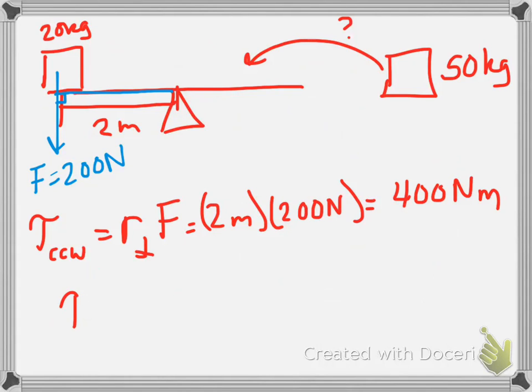So that means we need our clockwise torque to also equal 400 newton meters. Okay, technically it would be negative, right? Because it's a clockwise torque. So that's what we need.